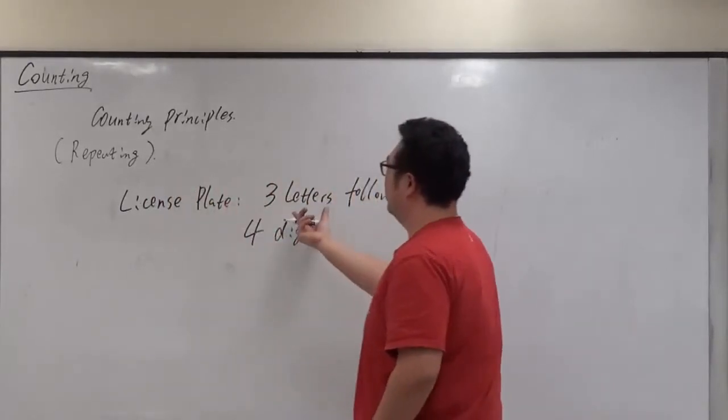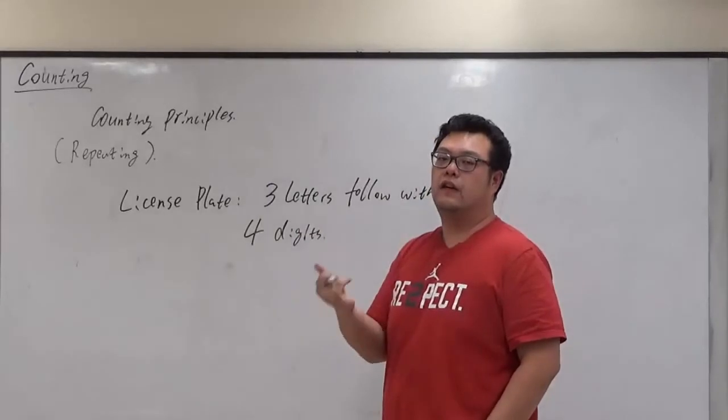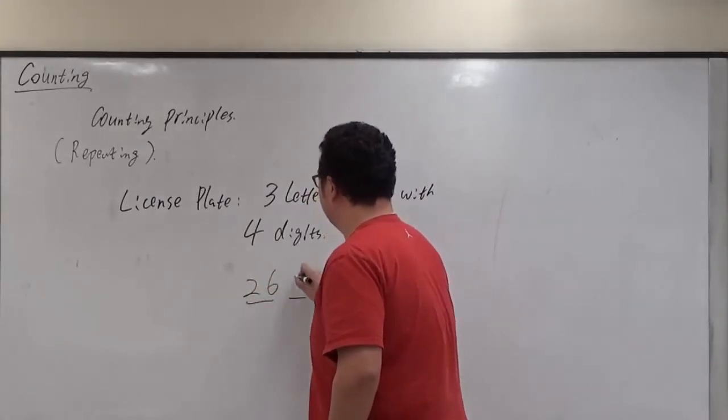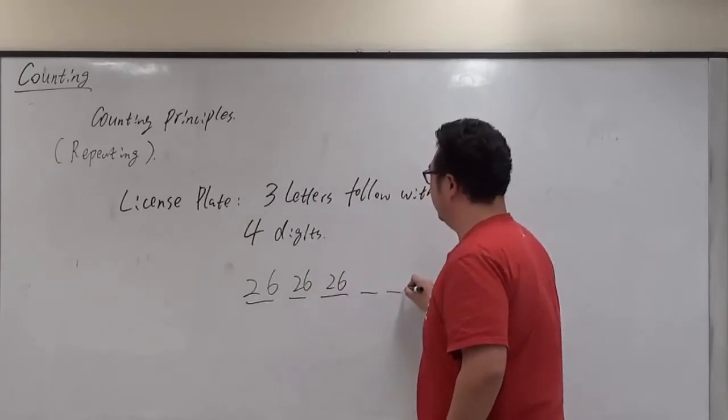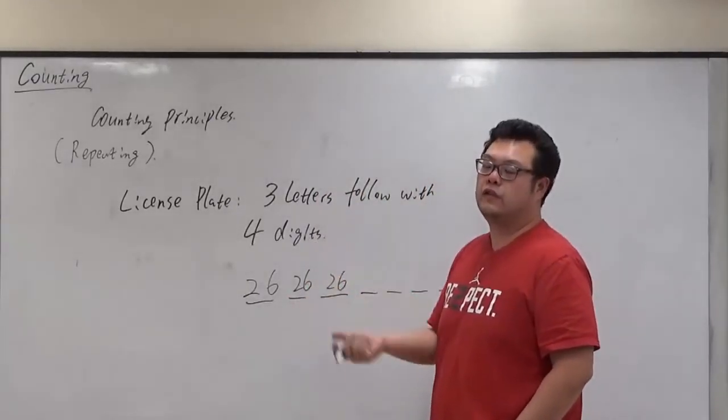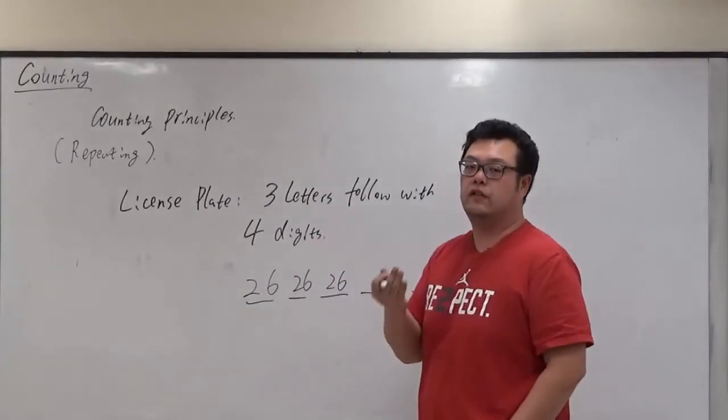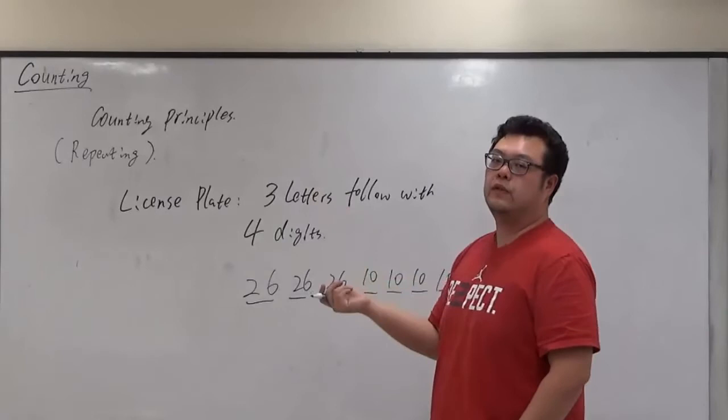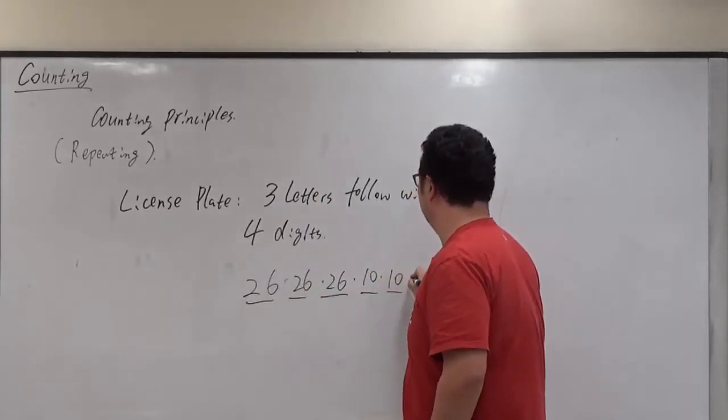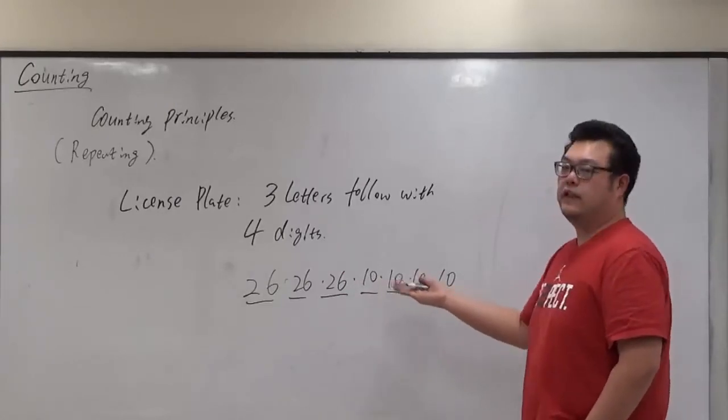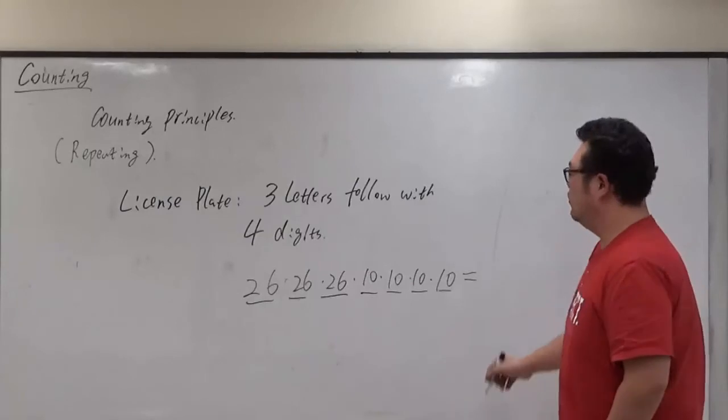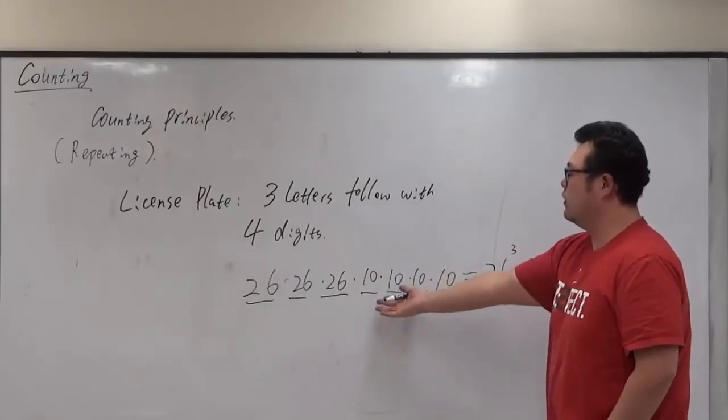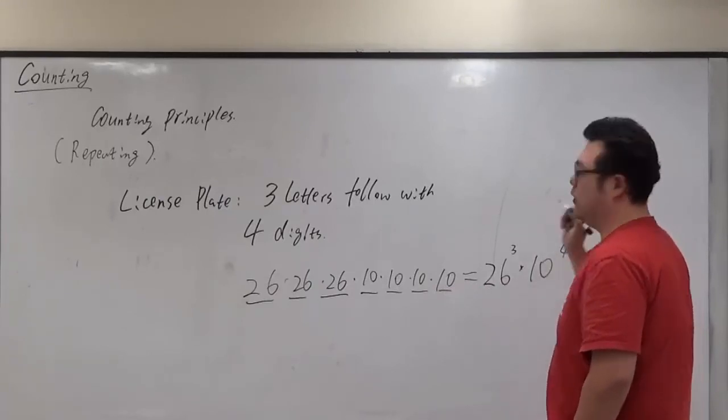From there, if we follow the counting principle, we have three letters and each letter is just 26 different options from A to Z. So we have three places for the letters and four places for the digits. Each digit also could be chosen from 0 to 9, so that's in total 10 different possibilities. And of course the counting principle told us to multiply them together. That is the way, but it's an extending way. If we write them in short, we're able to put the repeating number as exponents. So we have 26 to the cubic power for the letters, that multiplied by 10 raised to the fourth power.